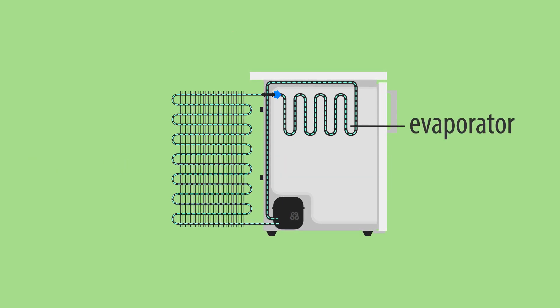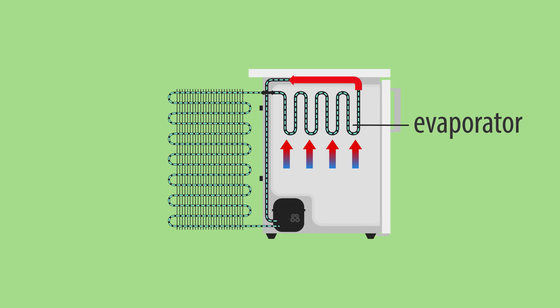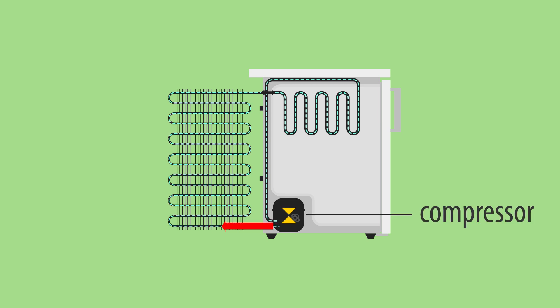Starting at the evaporator, the heat from the inside of the fridge evaporates the coolant running through the tubes. The heated gas then travels down to the compressor, which pressurizes the gas.